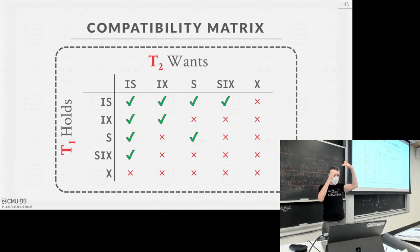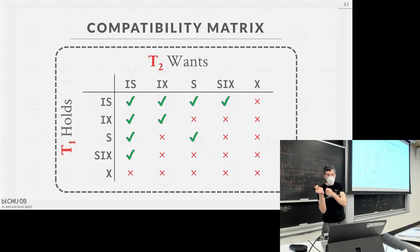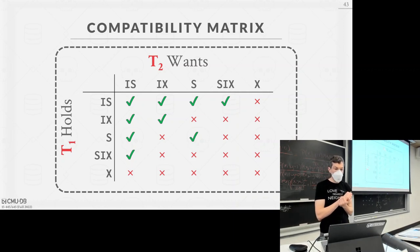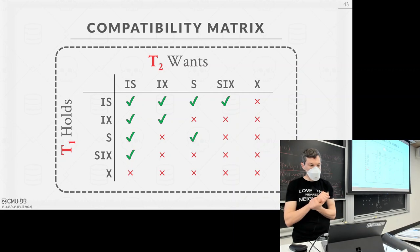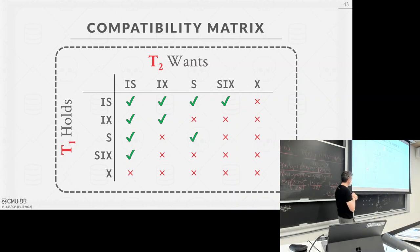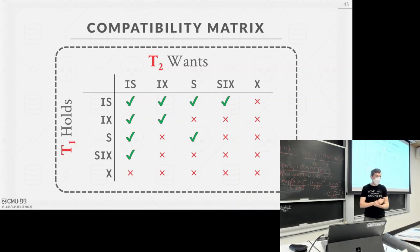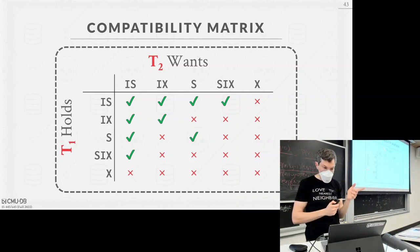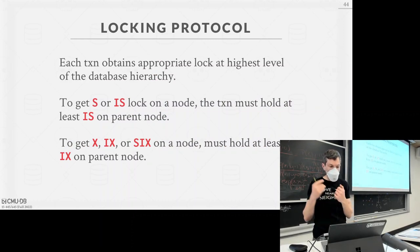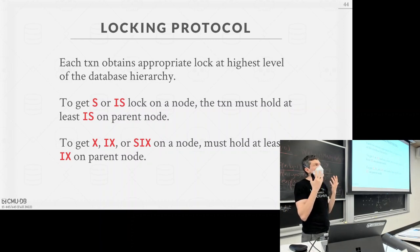An intention lock is a hint saying 'I'm going to require a lock in this mode in the future somewhere below,' but it may not have actually happened yet. As you go down the hierarchy in two-phase locking, you may reach the point where you try to acquire a shared lock on a tuple — so you take IS up above, which is fine — and then at the actual tuple you want, someone holds an exclusive lock, and you have to wait.